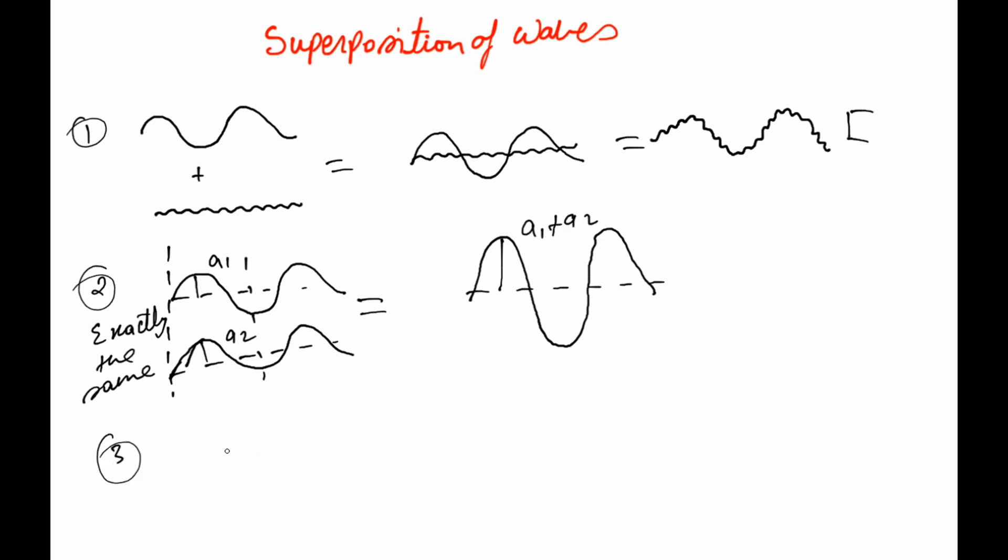For the third example, let's say you have a wave like this and another wave which looks like that. Let's say they are exactly oriented and they are exactly the same. And if this has amplitude A1 and this has amplitude A2, then the final wave will have an amplitude A1 minus A2 or A2 minus A1, whichever is bigger.